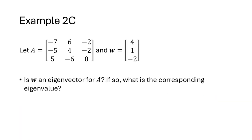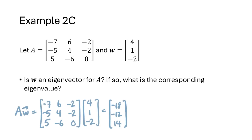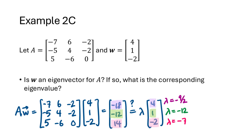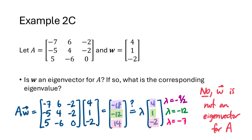One more example with the same matrix A. We have another vector W, and we want to know if W is an eigenvector for A. We multiply A times W, but this time we get negative 18, negative 12, 14. Setting it equal to lambda times W, we get a different value for lambda for each entry. In order to be an eigenvector, we'd need the same lambda for all entries, so W is not an eigenvector for A.